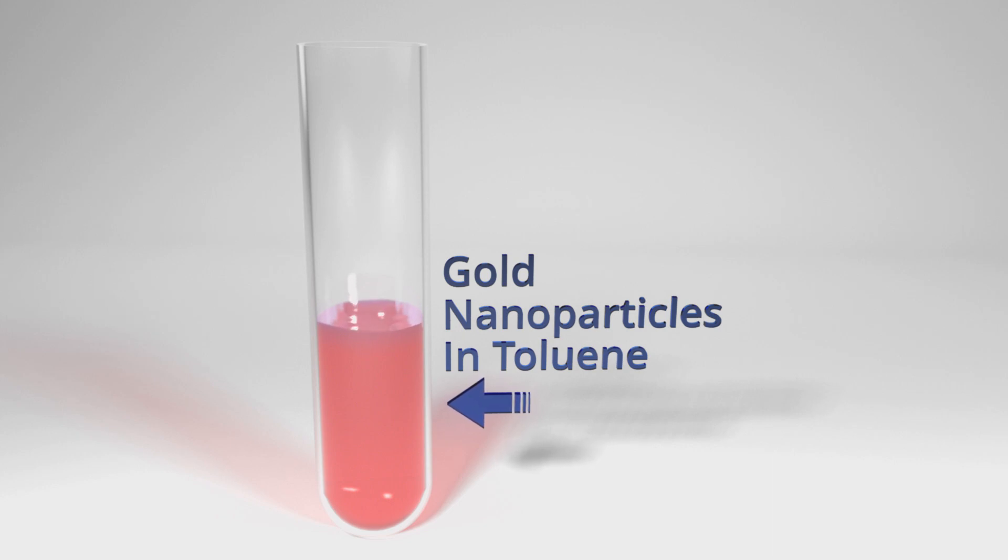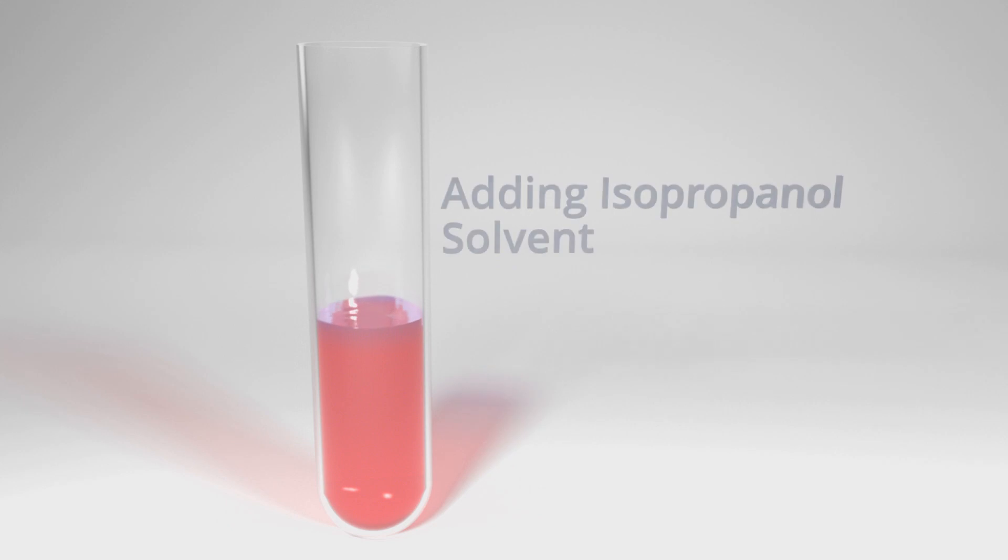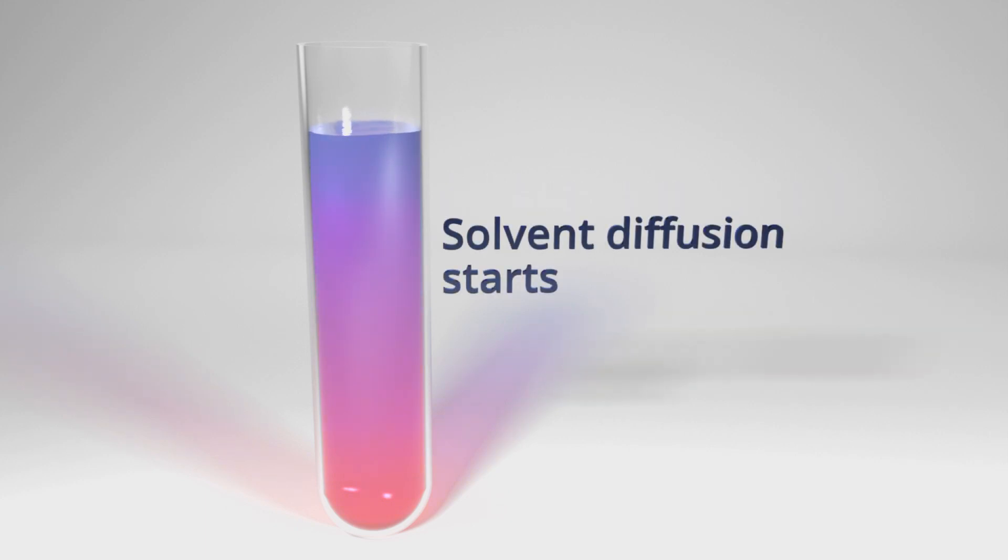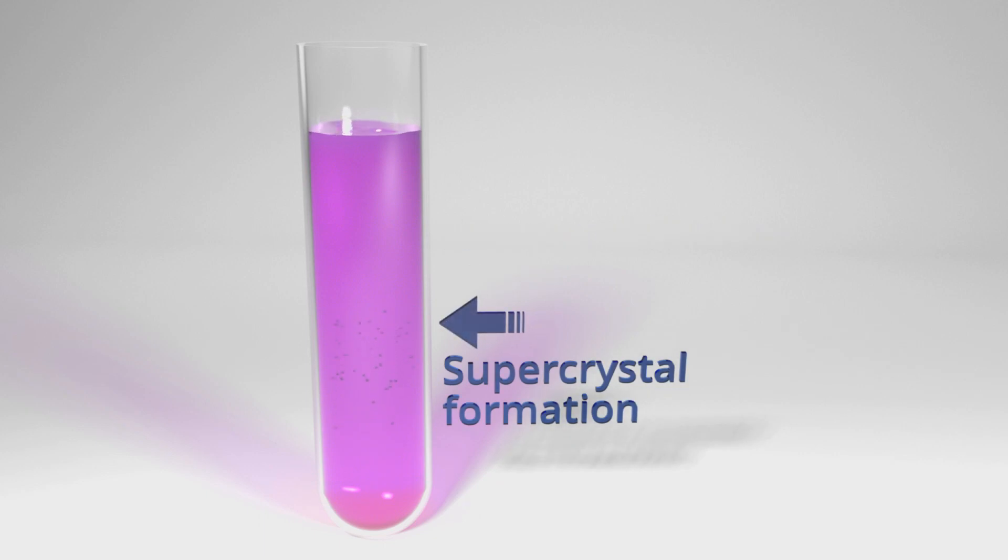We put gold nanoparticles in toluene solvent, and then on the top, we put isopropanol solvent and leave it in ambient conditions. The diffusion between the two solvents starts immediately, and the isopropanol diffusing into toluene makes the gold particle solution supersaturated and causes super crystal formation to occur.